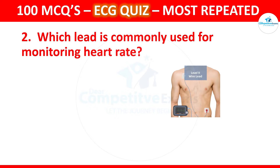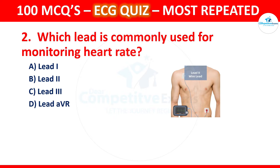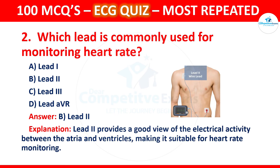Question 2: Which lead is commonly used for monitoring heart rate? Options are Lead 1, Lead 2, Lead 3, and Lead AVR. The correct answer is Lead 2. Lead 2 provides a good view of the electrical activity between the atria and the ventricles, making it suitable for heart rate monitoring.